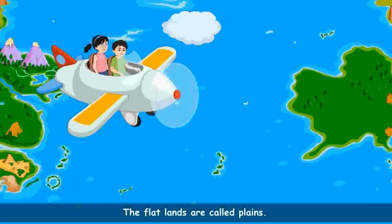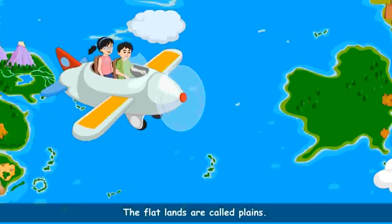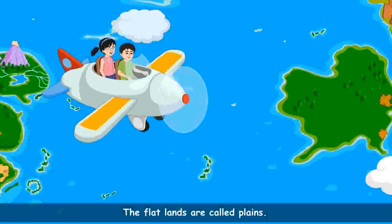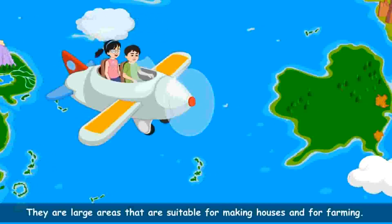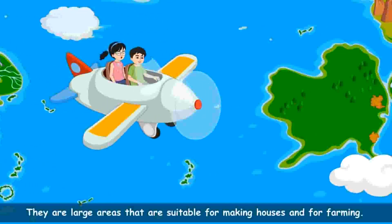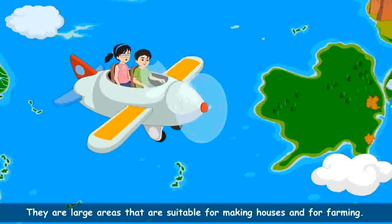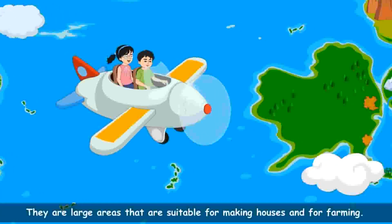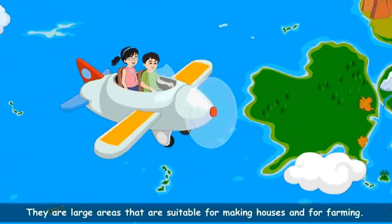Now we are flying on the flatlands, which are called plains. They are large areas that are suitable for making houses and for farming. The climate of the plains is hot in summers and cold in winters.